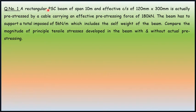Question number 1. A rectangular PSC beam of span 10 meter and effective cross-section of 120mm by 300mm is actually pre-stressed by a cable carrying an effective pre-stressing force of 180 kN. The beam has to support a total imposed load of 5 kN per meter which includes self-weight of the beam. Compare the magnitude of principal tensile stresses developed in the beam with and without actual pre-stressing.